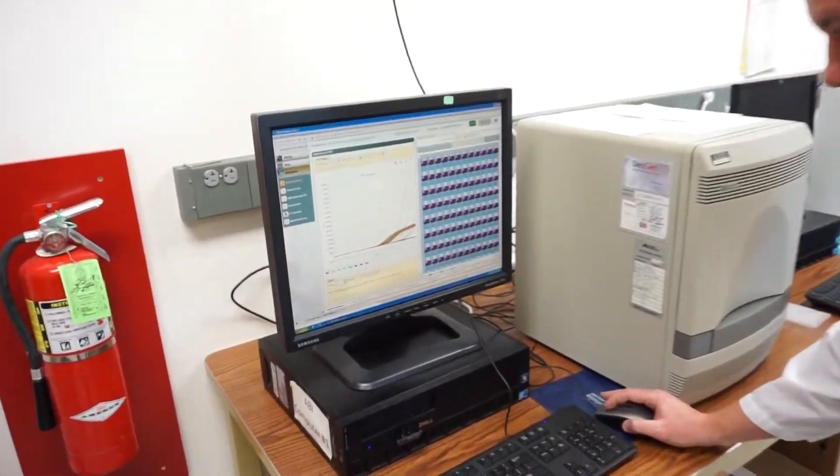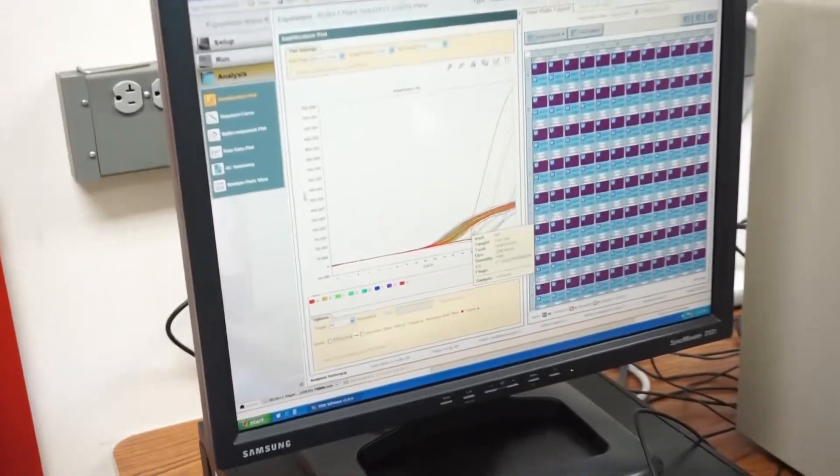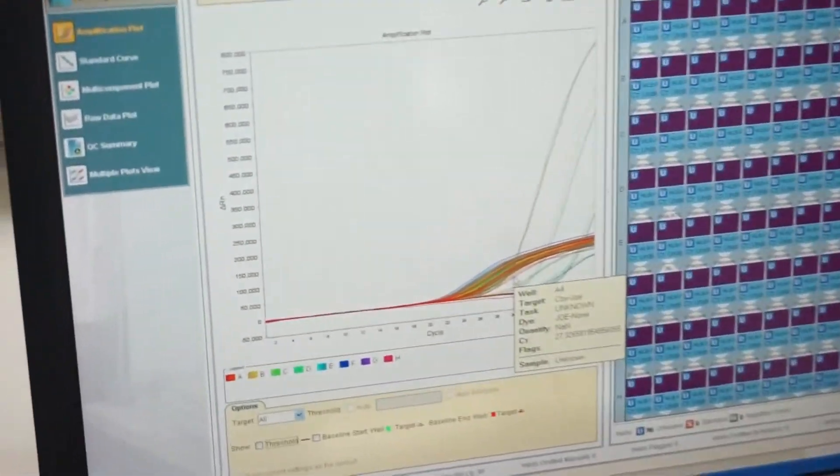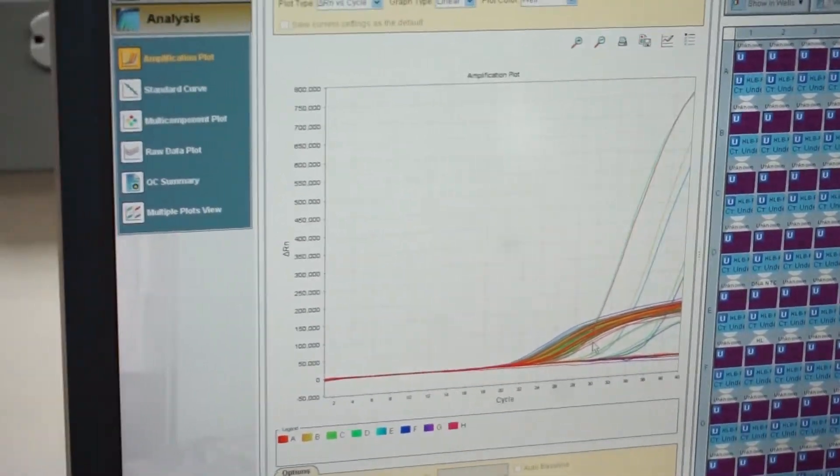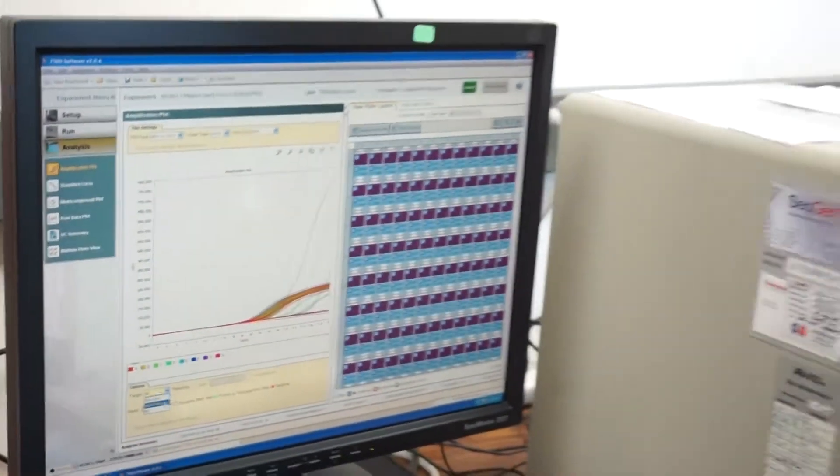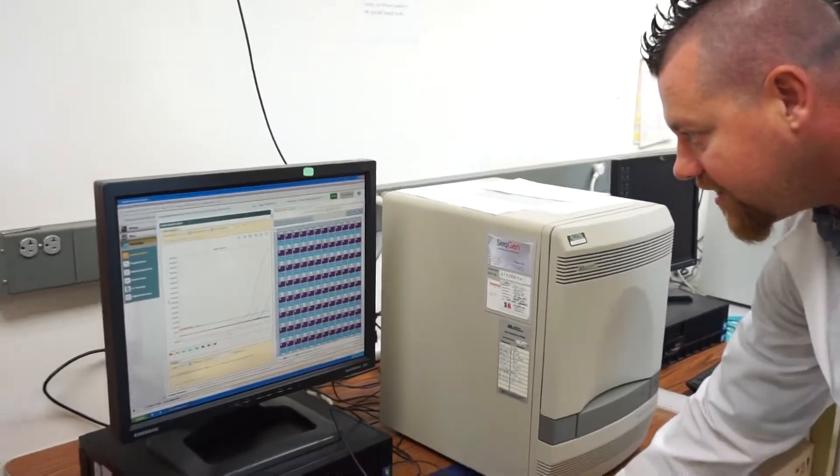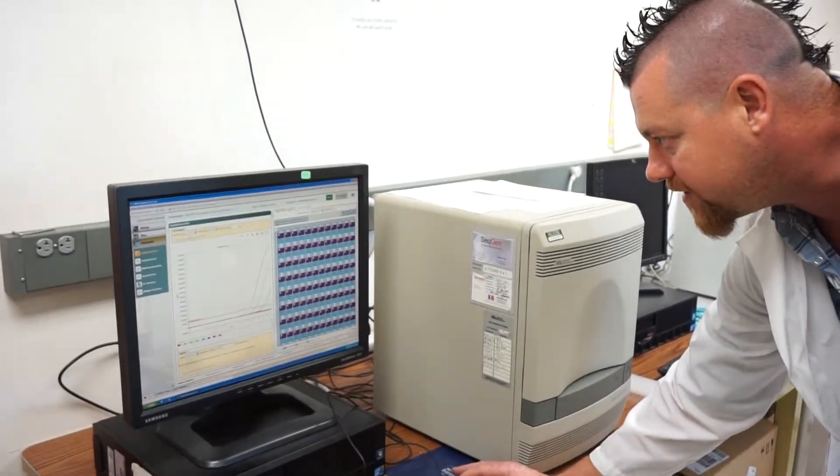This graph here shows various different lines. These lines are representations of the amount of amplicon that's generated over a period of time. We can determine a positive or negative sample based on when these lines grow above this threshold.